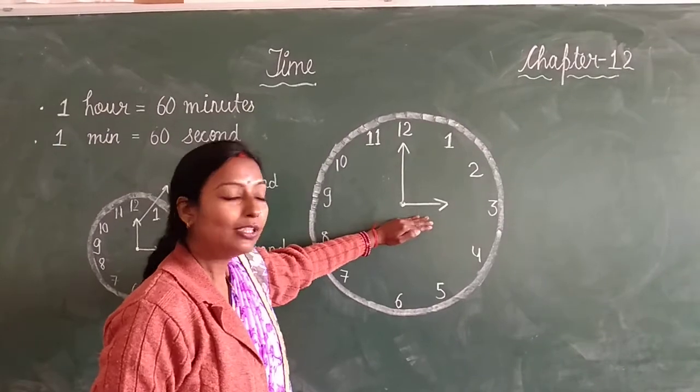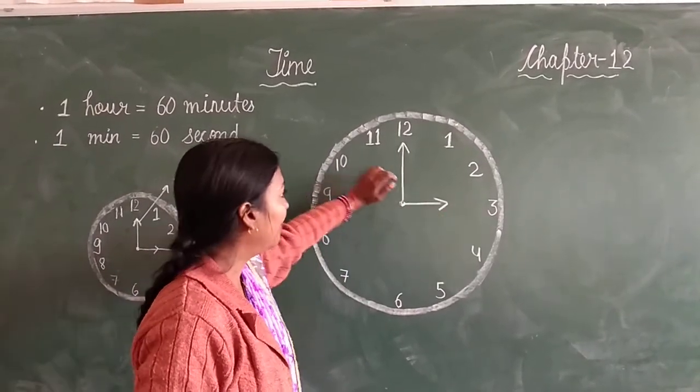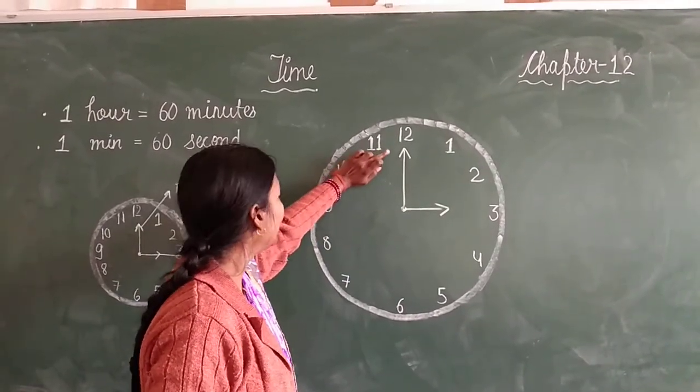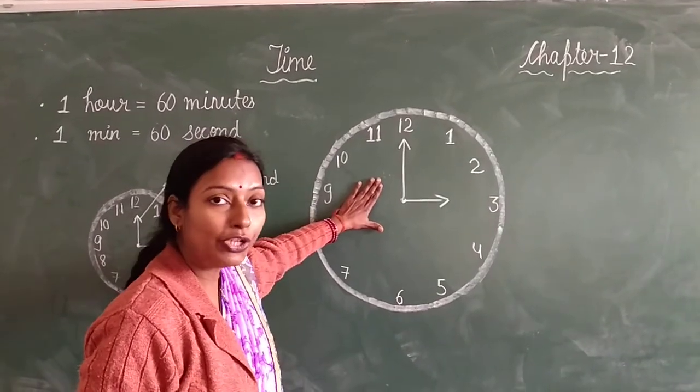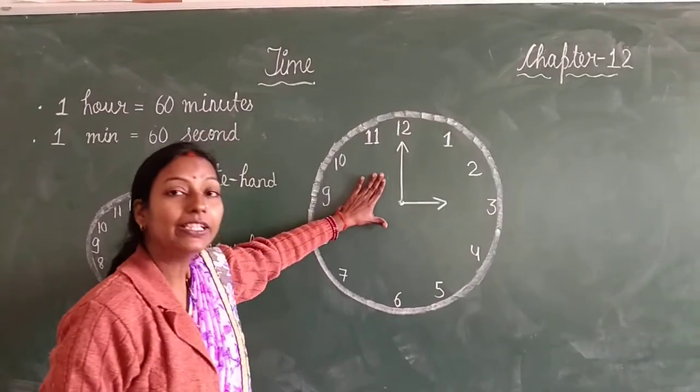Now the hour hand is on 3 and the minute hand is on 12. Then what is the time? This is 3 o'clock. We call it 3 o'clock.